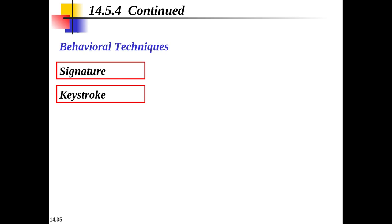In behavioral techniques, signature recognition uses biometric tablets and special pens to identify a person. These devices not only compare the final signature but also measure other traits such as the time required to write the signature, and this is used for verification. Keystroke dynamics measures the typing rhythm and behavior related to working with a keyboard — it can measure the duration of key presses, time between keystrokes, frequency of errors, and pressure on keys. However, it is not very accurate as the trait can change over time.